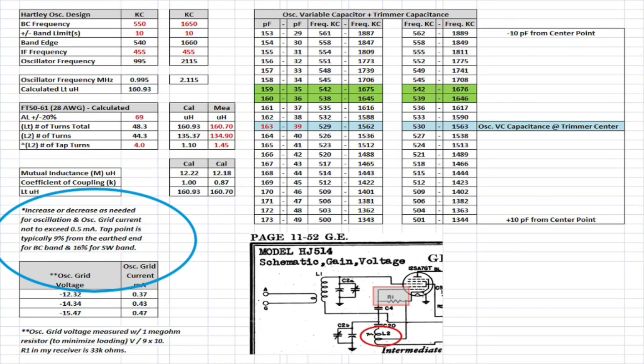And you can see, for partly oscillators that were tube-based, the typical tap point was around 9% from the IRF-10 for the broadcast band and about 16% for the shortwave band. And in addition, you can see at the bottom here I measured my grid voltage and calculated the grid current across the grid leak resistor.